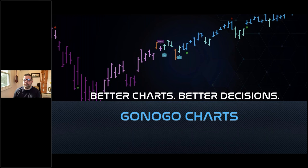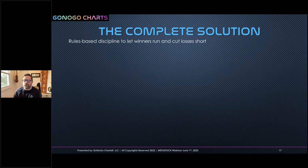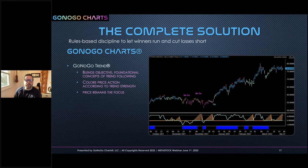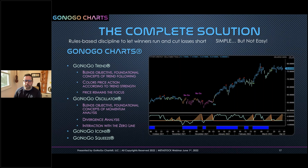That covered the GoNoGo trend indicator. For the next 20 minutes, we'll talk about the full suite of tools — how they complement the trend and allow us to stay with it. The full suite puts a complete understanding of technical analysis in the price panel and one oscillator panel below. Even with all that information, we'll still have a fairly simple chart that's easy to understand. We've covered trend; now let's talk about the GoNoGo Oscillator, which does the same thing but for momentum, plus the GoNoGo Icons and the GoNoGo Squeeze.